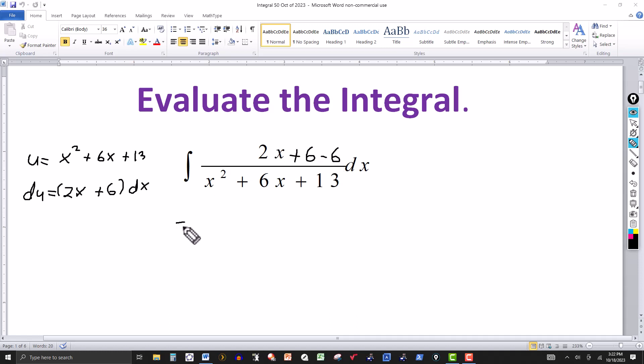So let's try this then. We're going to break this up into two integrals. The 2x plus 6 will stay together. So we got 2x plus 6, and that's going to be over x squared plus 6x plus 13. This will be a dx here.